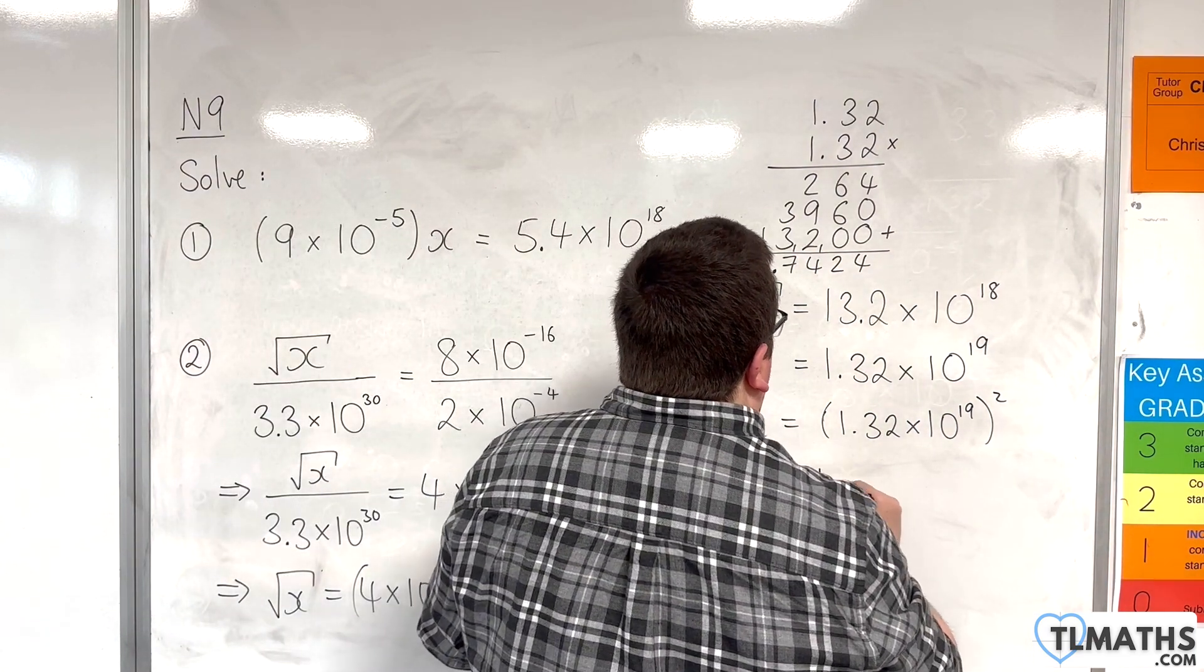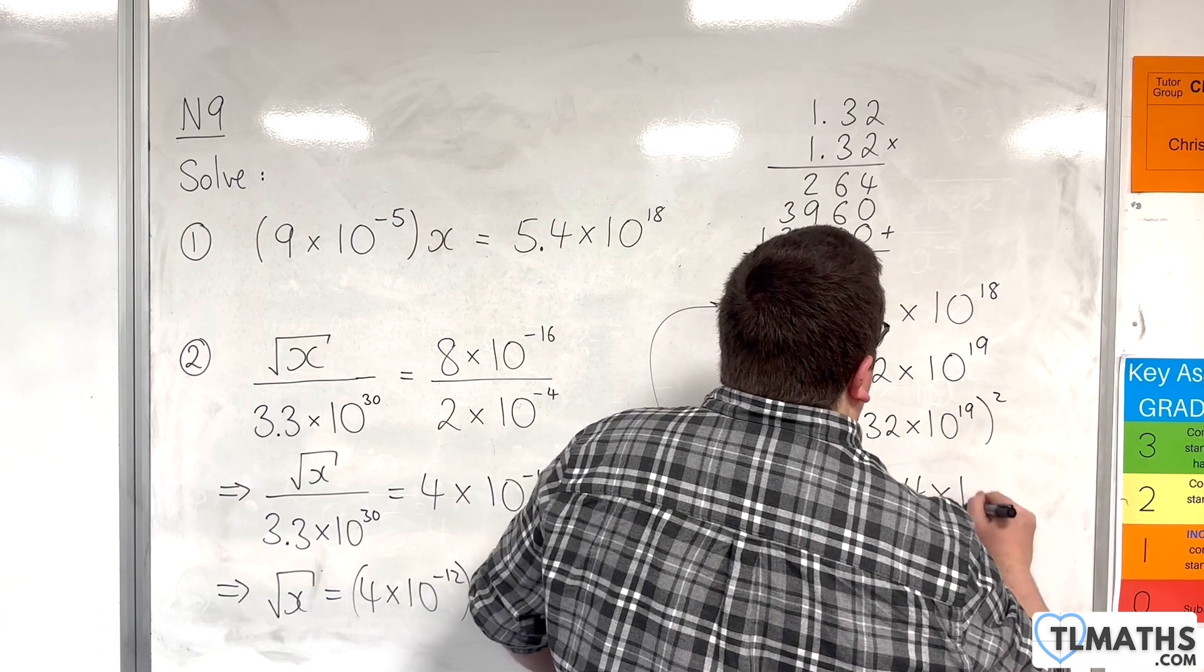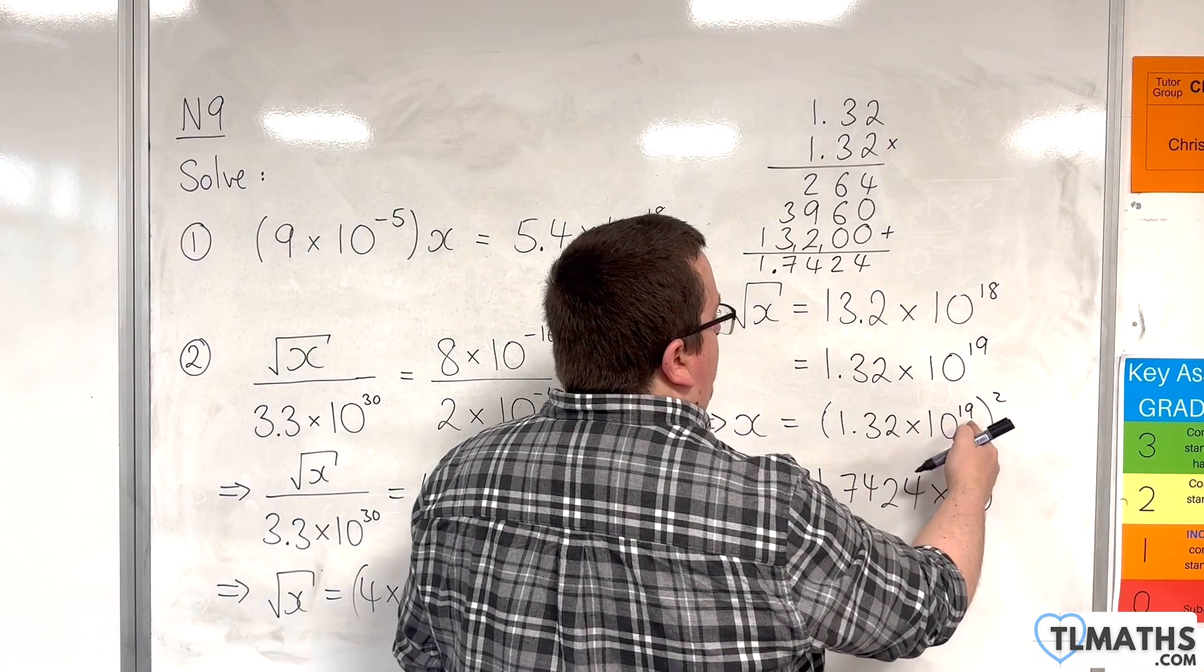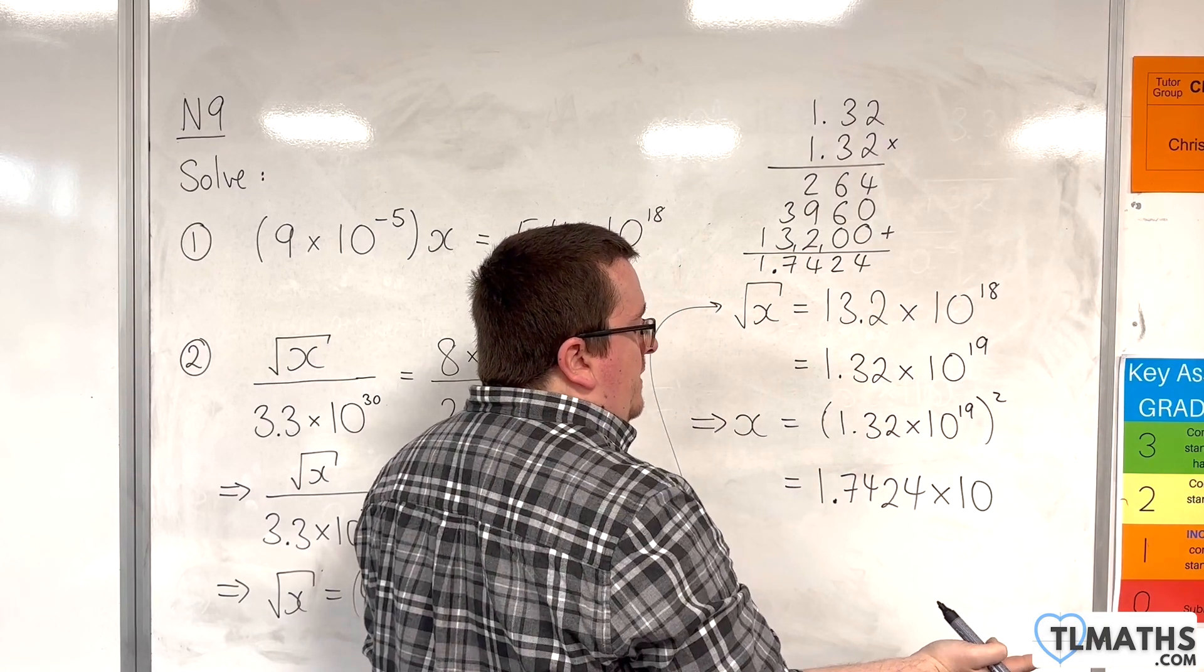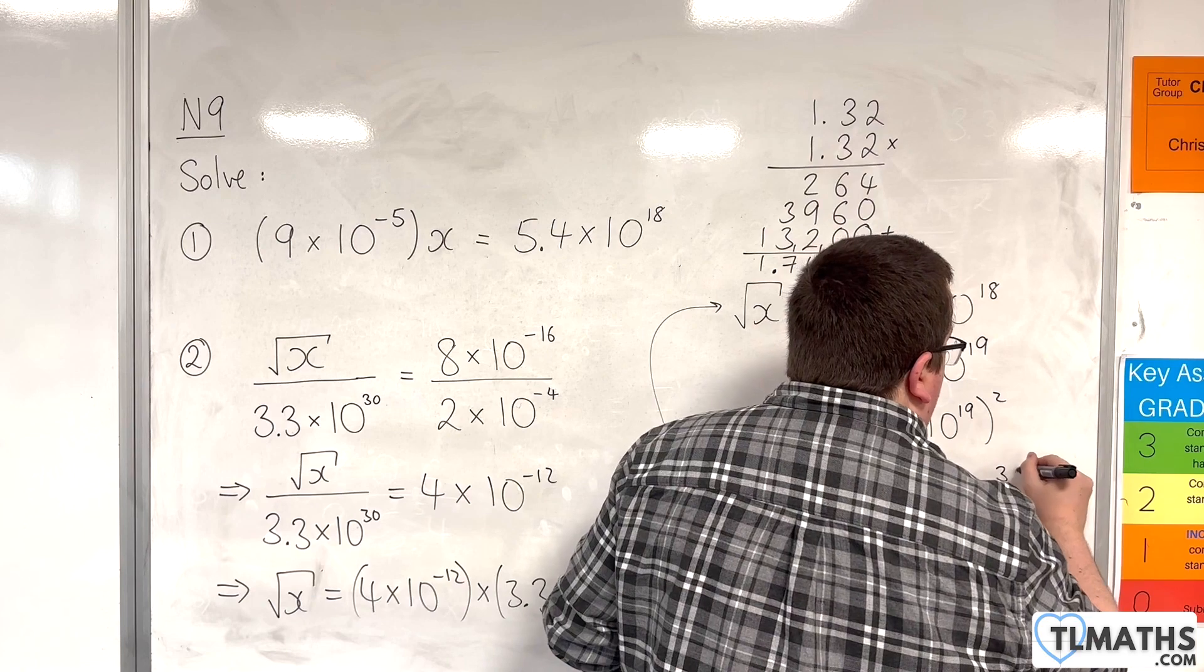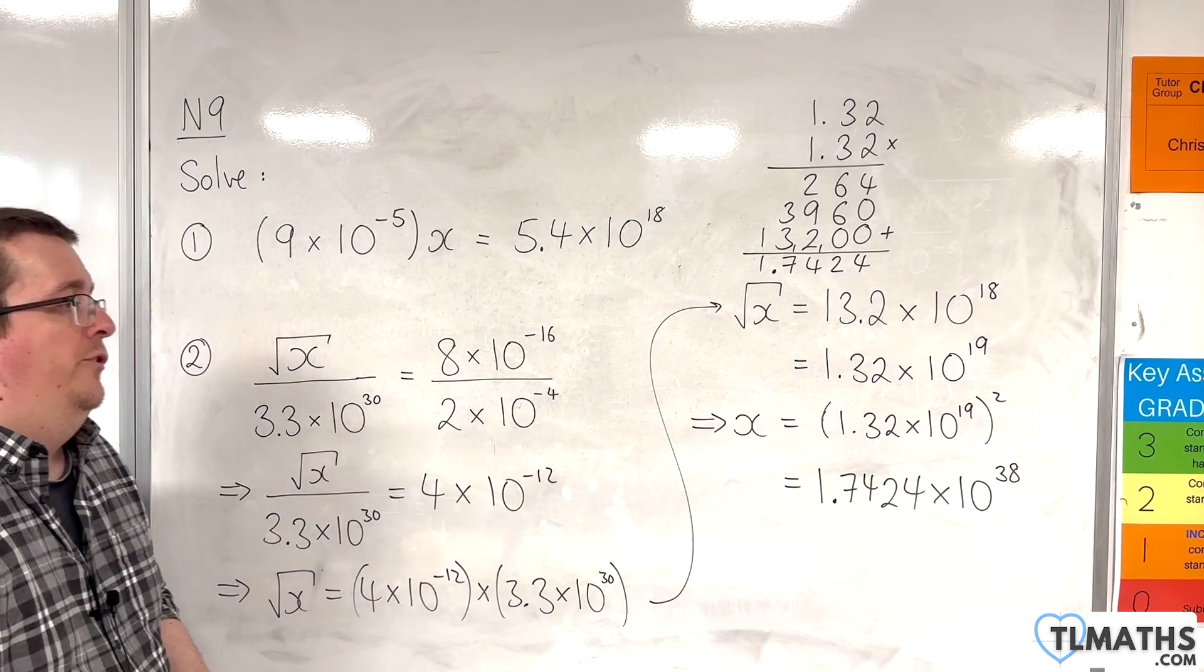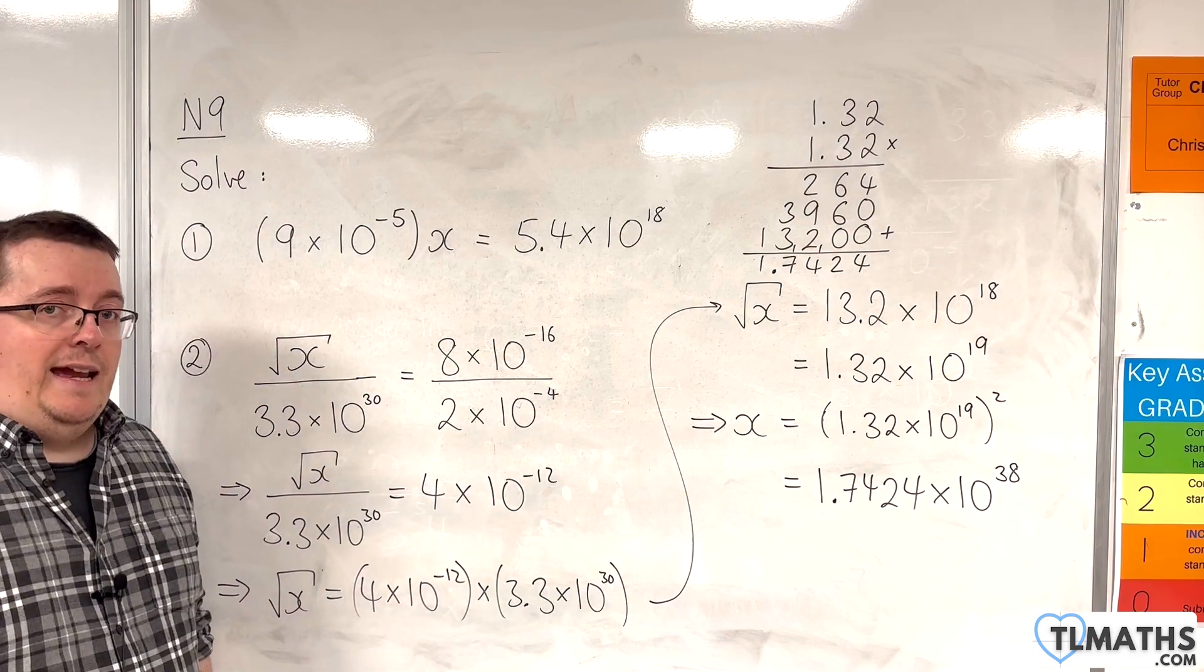So, this is 1.7424 times by 10 to the power of. So, 10 to the 19 times 10 to the 19 is 10 to the power of 19 plus 19, which is 38. So, x is 1.7424 times 10 to the 38.